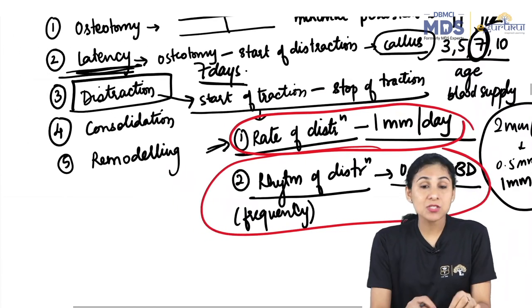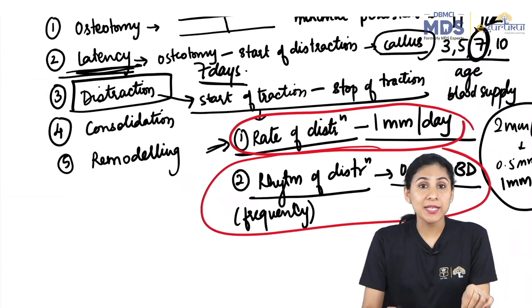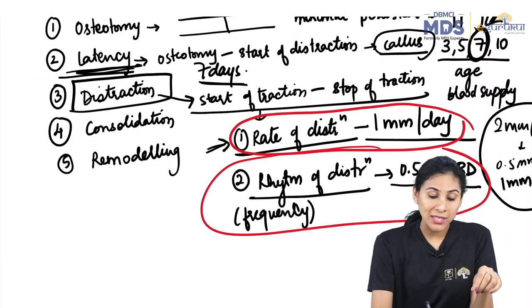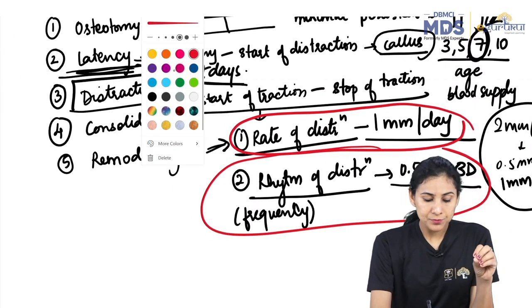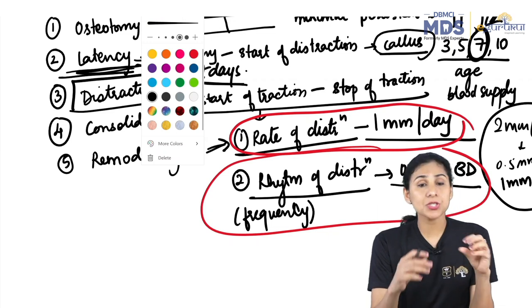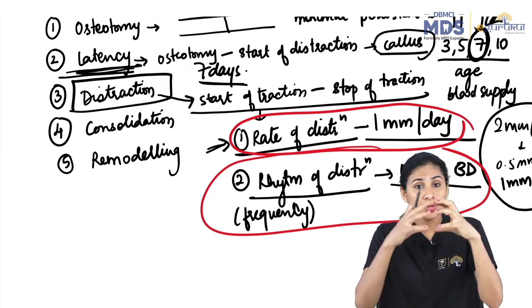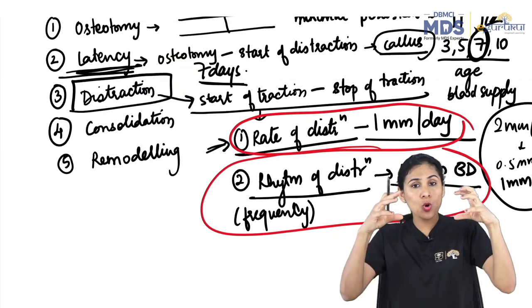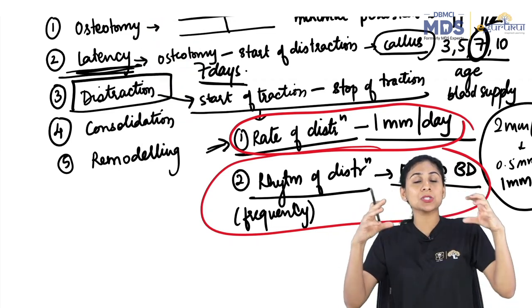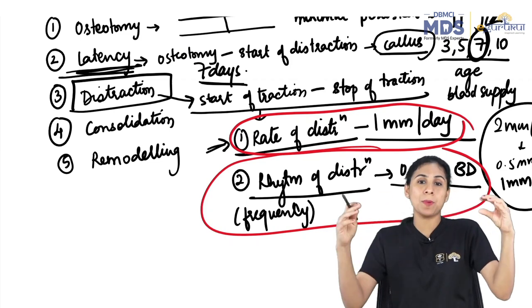For a very young child or infant, the rate may be 2 mm per day, with a rhythm of 0.5 mm four times a day or 1 mm twice a day. For exam purposes, remember: rate of distraction on average is 1 mm per day, and rhythm is 0.5 mm twice daily.